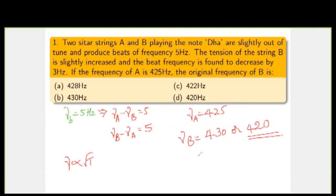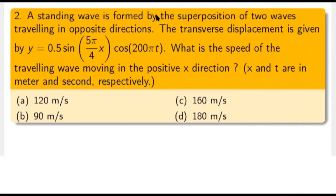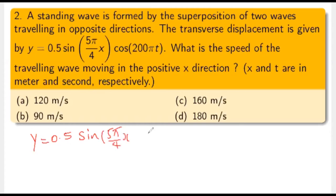Next question: a standing wave is formed by the superposition of two waves traveling in opposite directions. The transverse displacement is given by y = 0.5 sin(5π/4 · x) cos(200πt). What is the speed of the traveling wave moving in the positive x direction? The displacement equation representing a standing wave is y = 0.5 sin(5π/4 · x) cos(200πt).